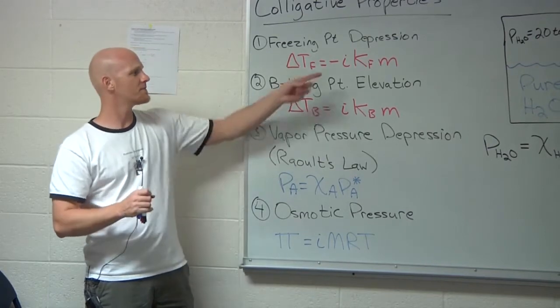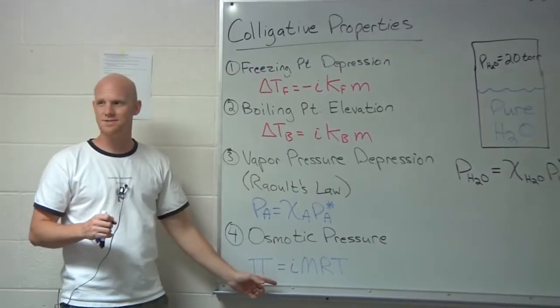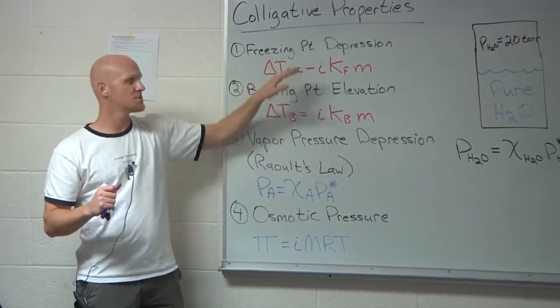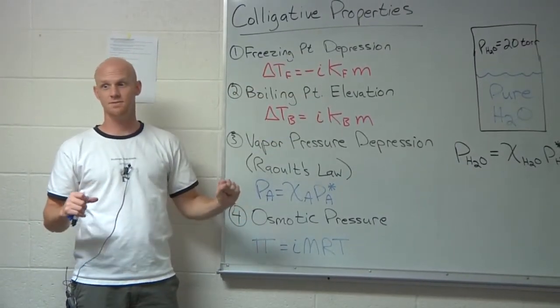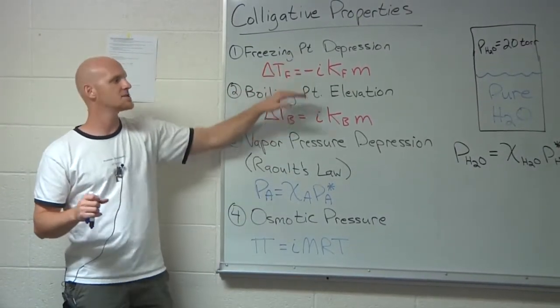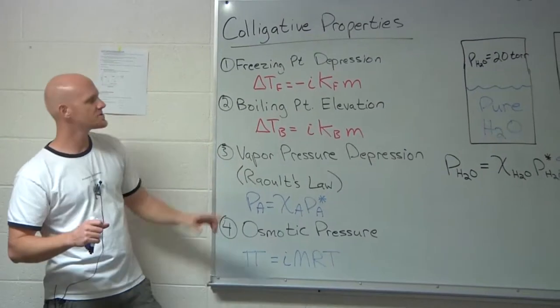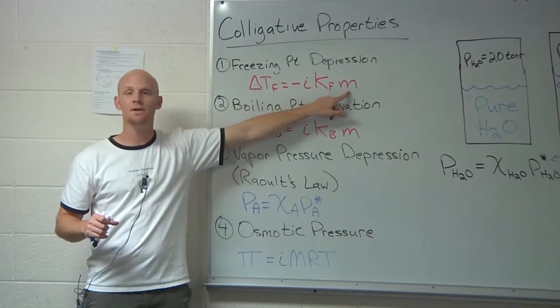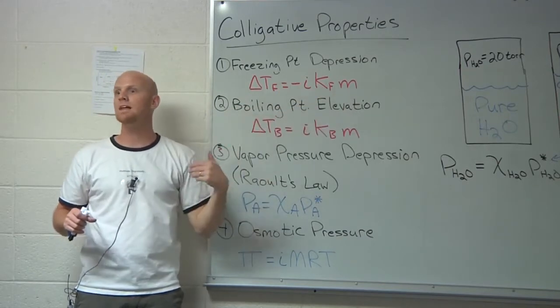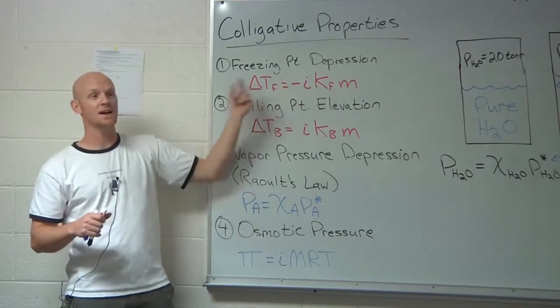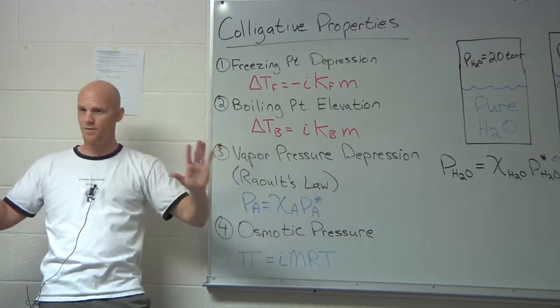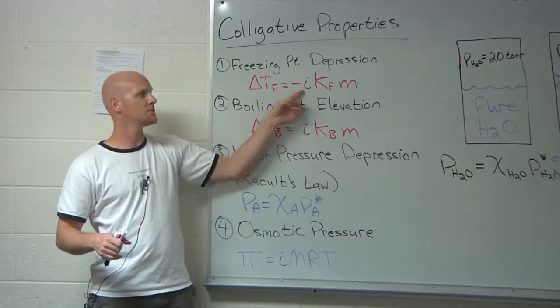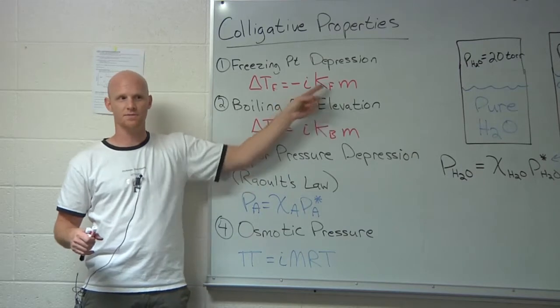So one thing to note, I put the Van't Hoff factor in each one of these equations. You'll see, depending on what textbook you use and whose professor's notes you're looking at, you'll see different variations of these equations. Some professors don't put the I in there, and they assume that the M here means the total molality of pieces and takes the I already into account. So you may see it like that somewhere down the road. But I find students make less errors when it's all kind of spelled out for them.